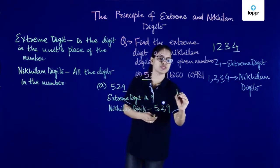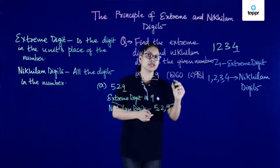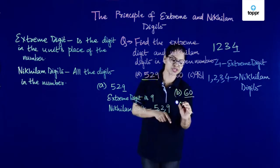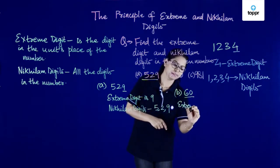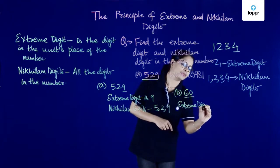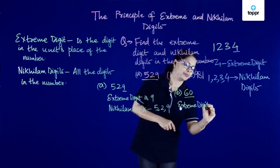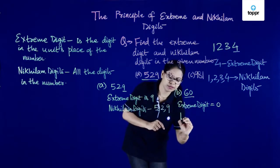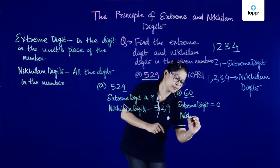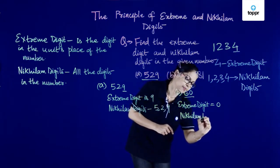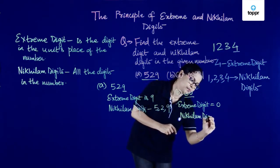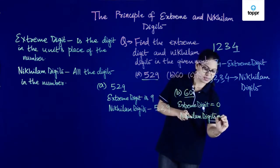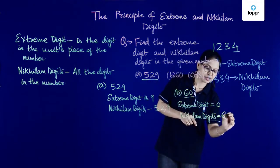For the second number, 60, the extreme digit will be 0 and the nickelam digits will be 6 and 0.